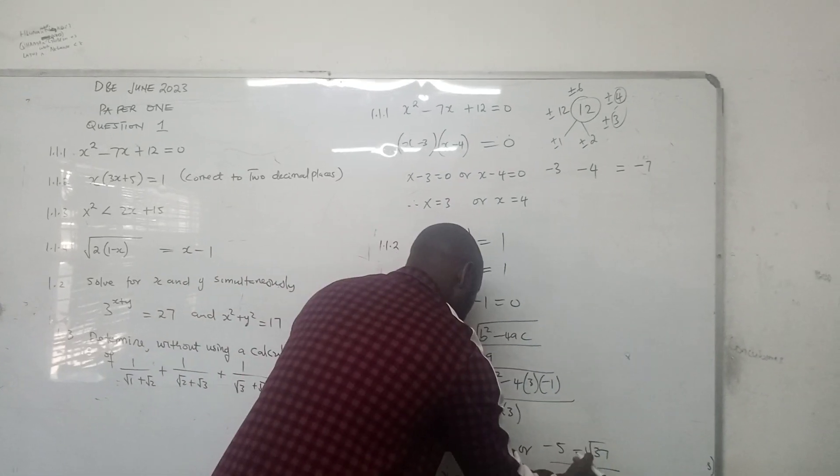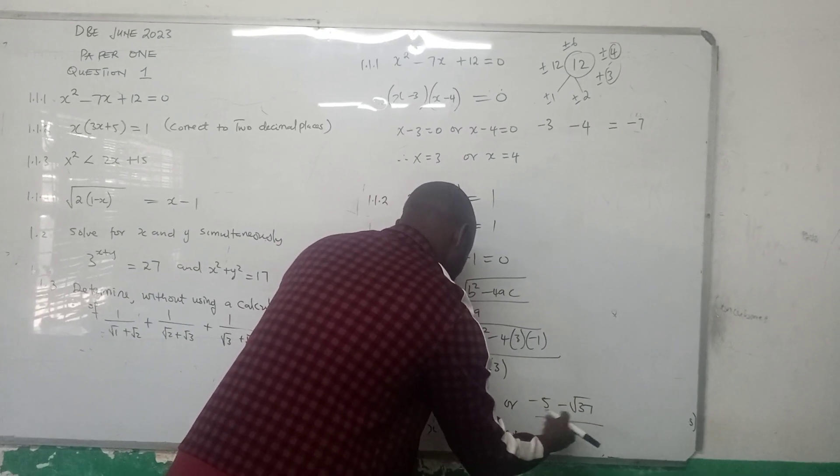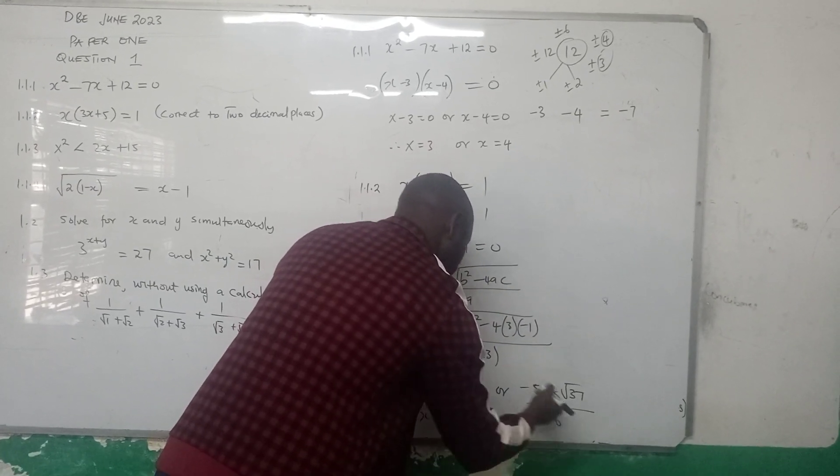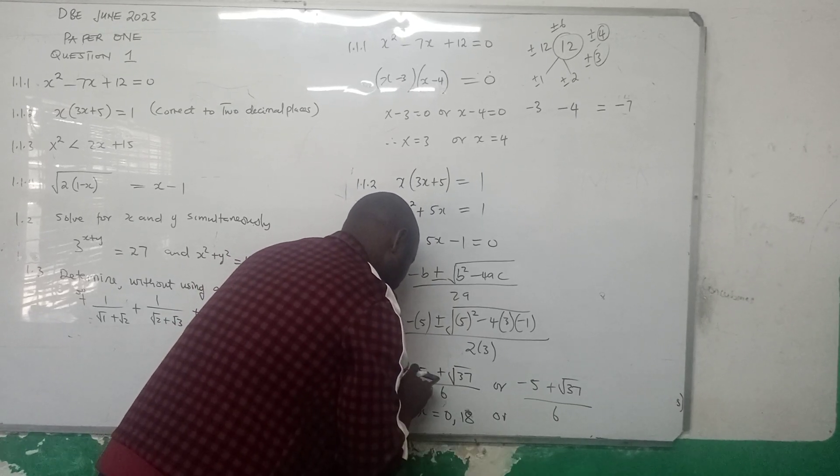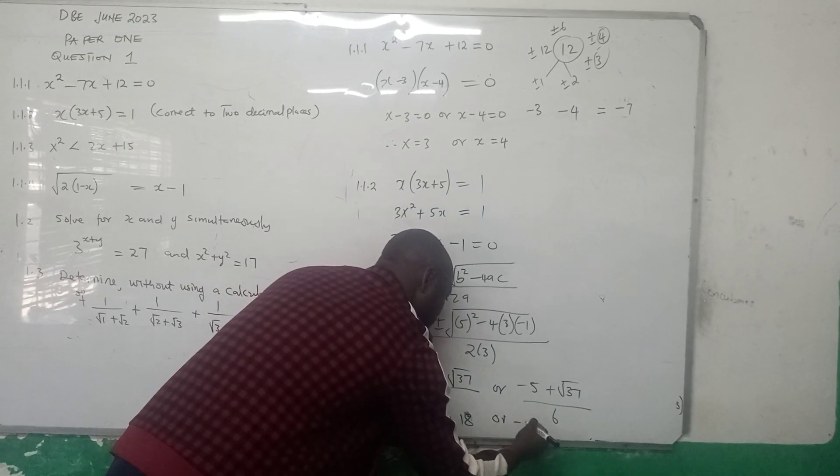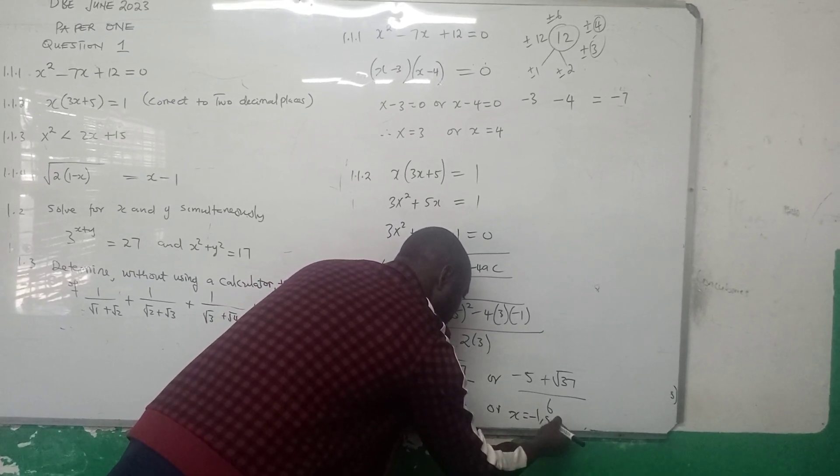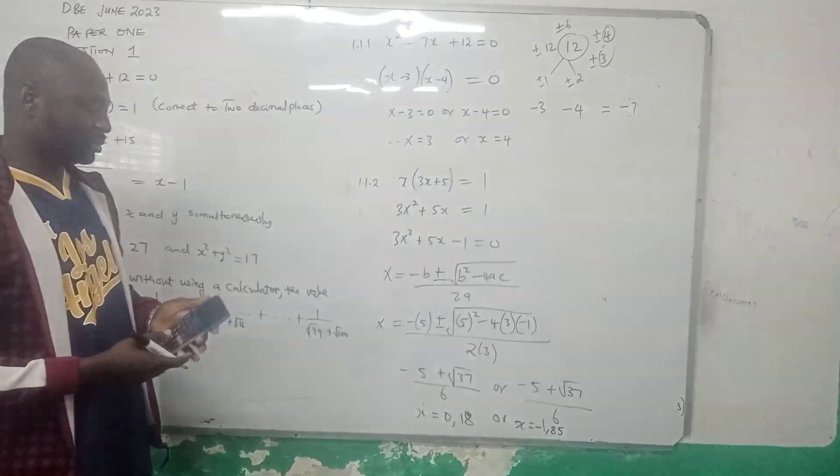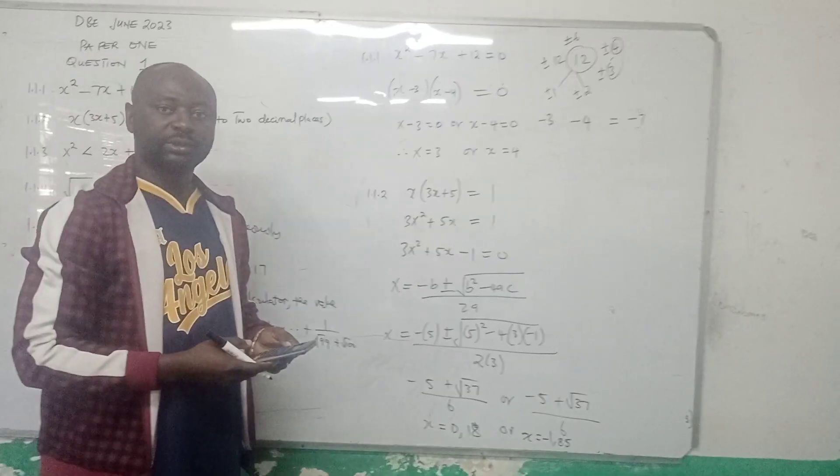The other answer will be minus 5 minus, so it will give you x equals to minus 1.85. That's what you got. So these are the two solutions to two decimal places.